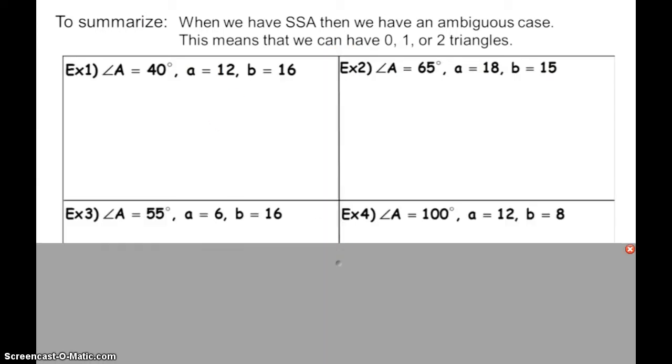Hopefully you've watched the video on the ambiguous case for law of sines. Remember that when we have side-side-angle, we have that pair - that side and angle that are across from each other that we can use for law of sines. However, we don't know how many triangles we have. So the first thing we need to know is how do I figure out how many triangles there are? And then once I know how many triangles, if they even exist, I need to solve for them. That's what we're going to look at in this video.